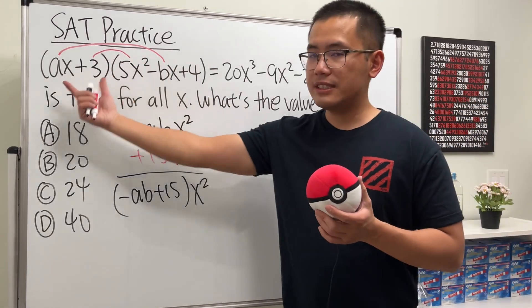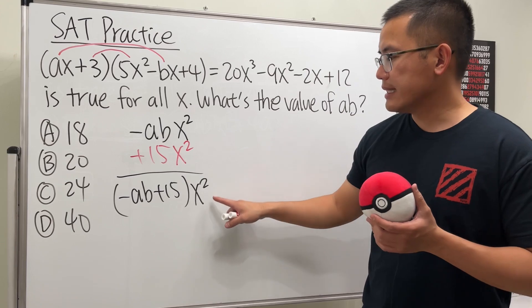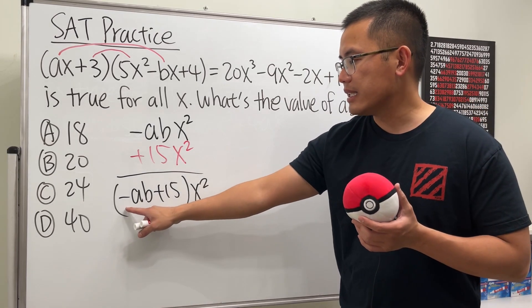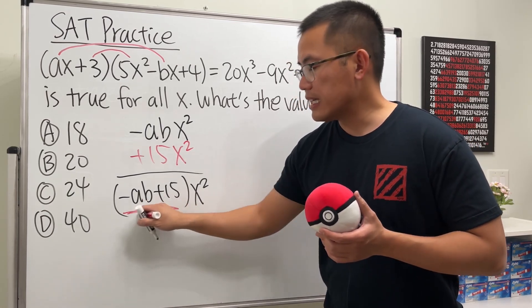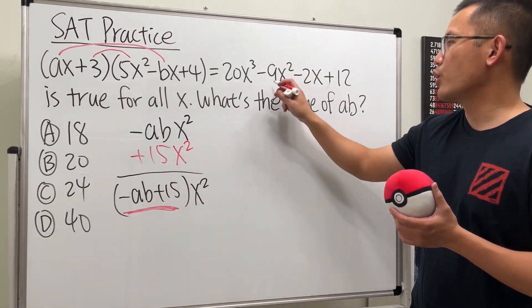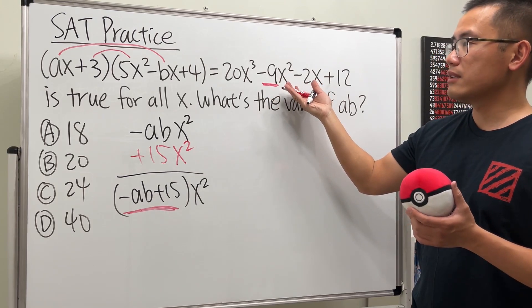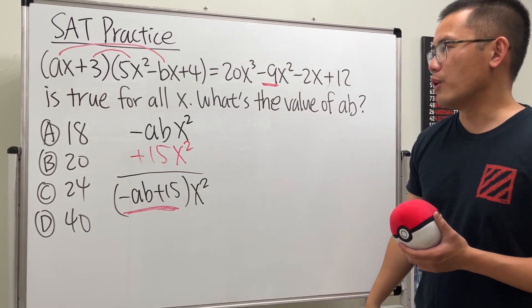Now, on the left-hand side, this is the term that has x squared, and we have the negative ab, right? The ab that we want. This is the coefficient of x squared on the left-hand side. It must be the same as the coefficient on the right-hand side. Otherwise, they cannot be equal for all x.